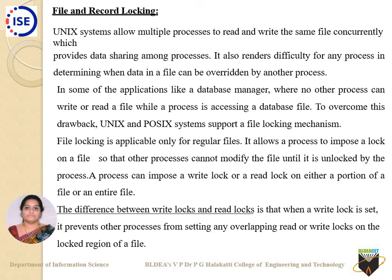In Unix, there are two types of locks: a write lock and a read lock. Whenever a write lock is set on a particular file, it prevents other processes from both reading and writing onto that file — neither reading nor writing is permitted. This is what we call a write lock.